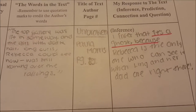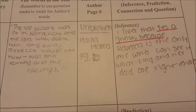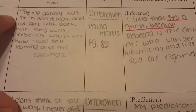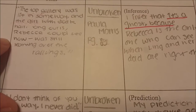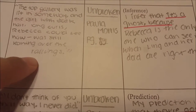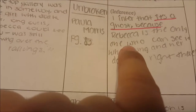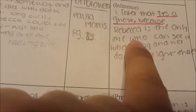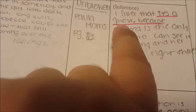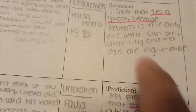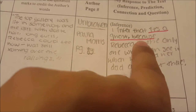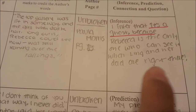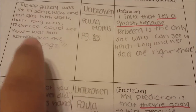I also want to take the time to show you great examples. Here's one: 'The top gallery was lit in some way, and the girl with dark hair and long curls — Rebecca could see — was still leaning over the railings. I infer that it's a ghost because Rebecca is the only one who can see it.' The inference is about something happening right now, it has the 'because' component, and the evidence is backed up by the actual words in the text.